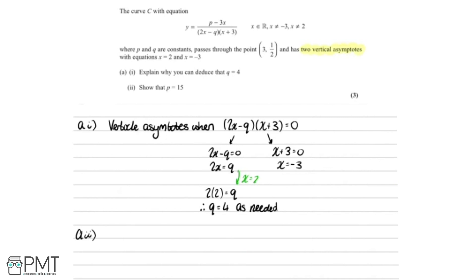Now part A part 2 says we need to show that p equals 15. In the previous part we worked out q equals 4, so I'm going to rewrite the equation for curve C replacing q with 4. Doing that we get y equals p minus 3x, all over 2x minus 4, multiplied by x plus 3. A key bit of information is that curve C passes through the point x equals 3 and y equals a half, so I'm going to substitute those values in.